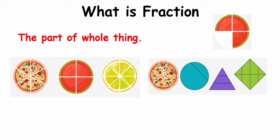One more example: suppose I have a watermelon. We have made four total pieces from the whole watermelon. Suppose you ate this part, this part, and this part — three parts. How many parts are left? Out of four, one part is still left, so the fraction becomes one upon four. And how much you ate — three out of four — so the fraction becomes three upon four, or three by four.